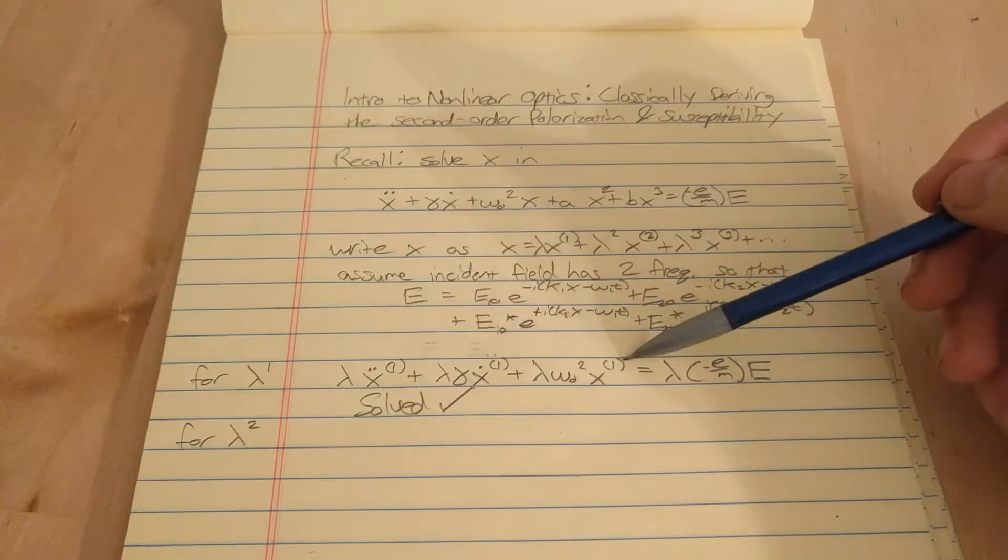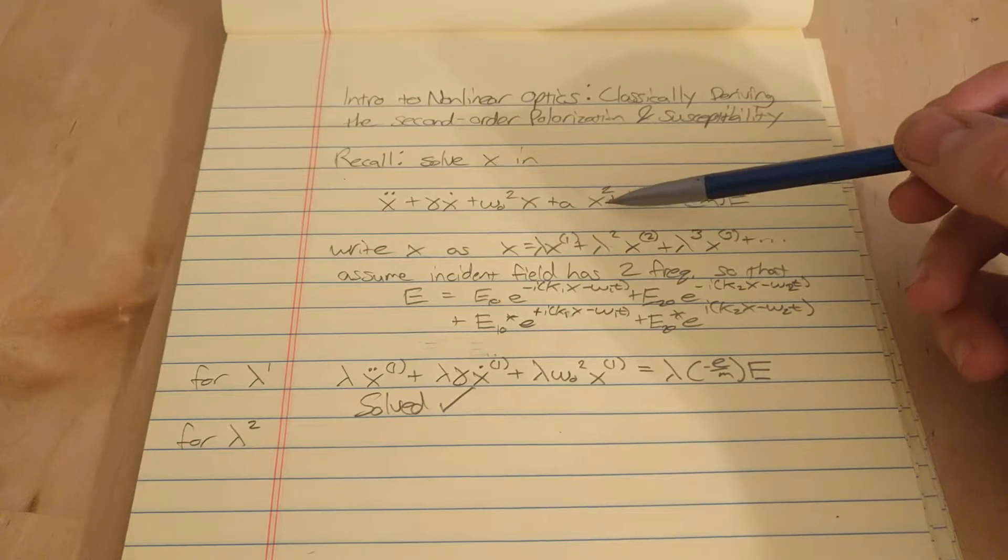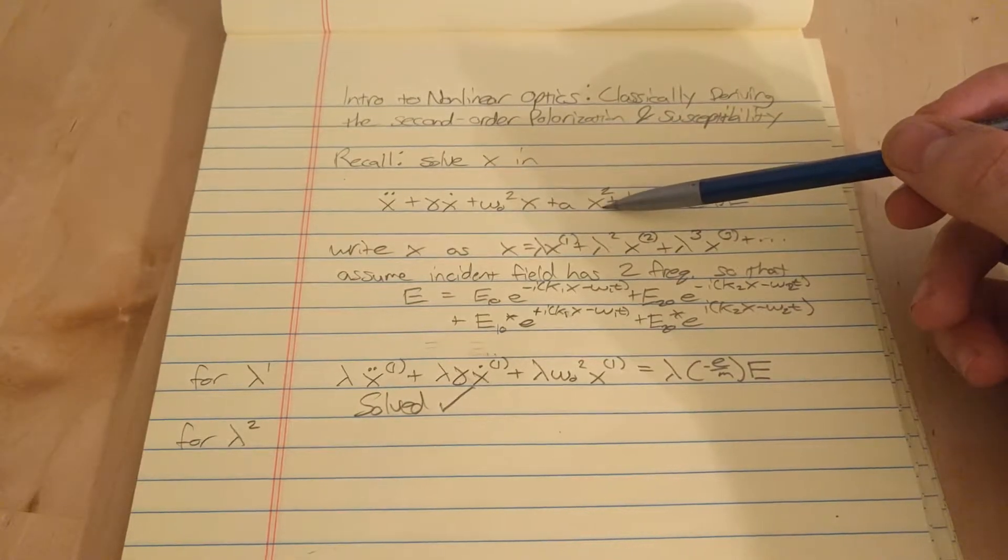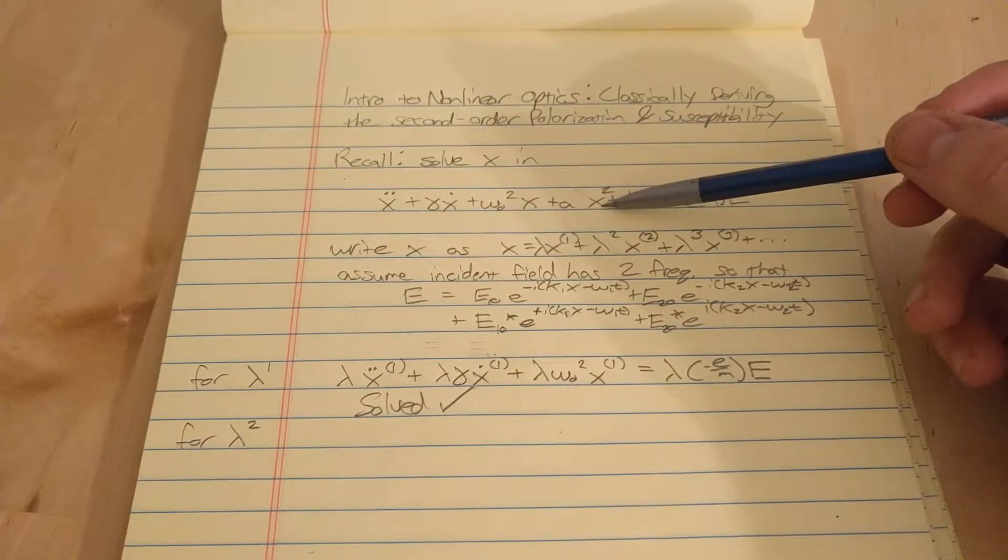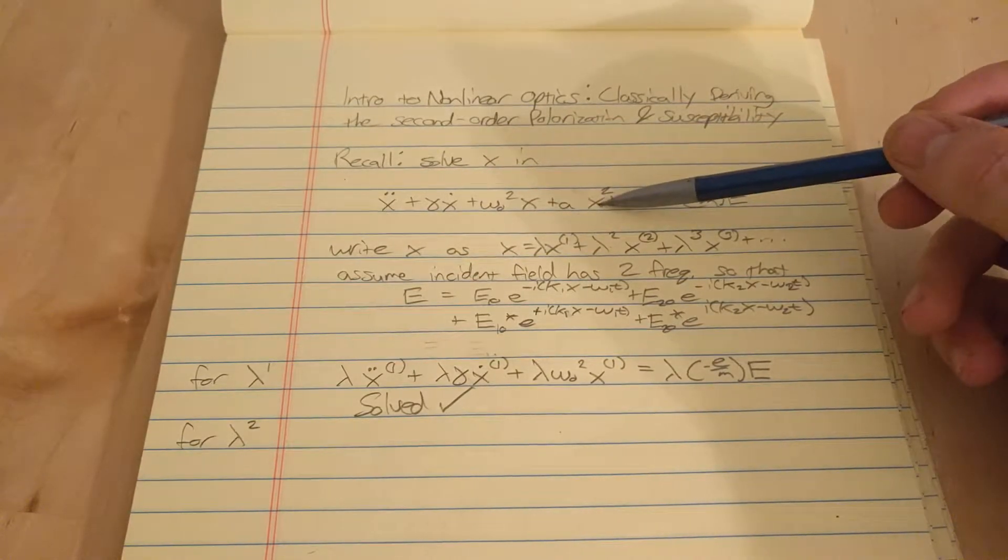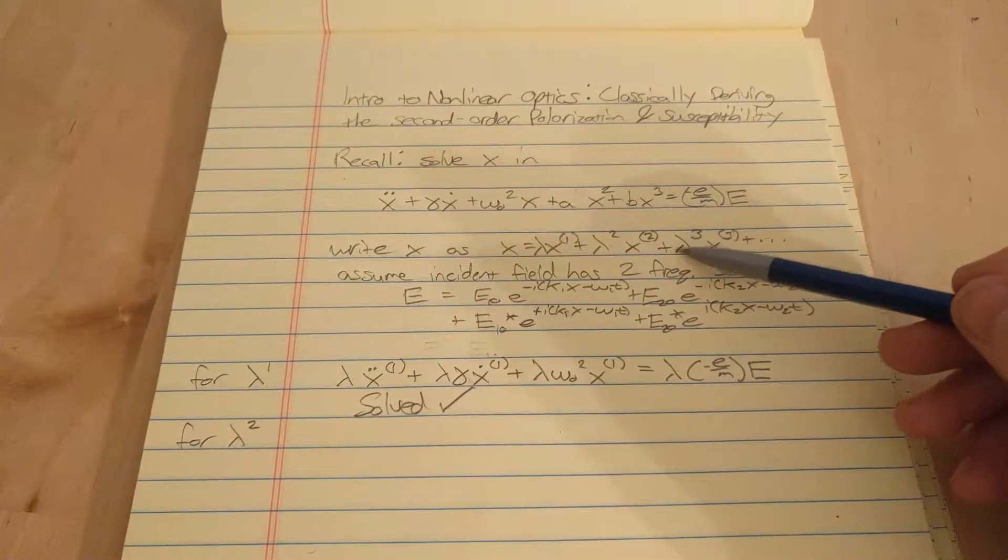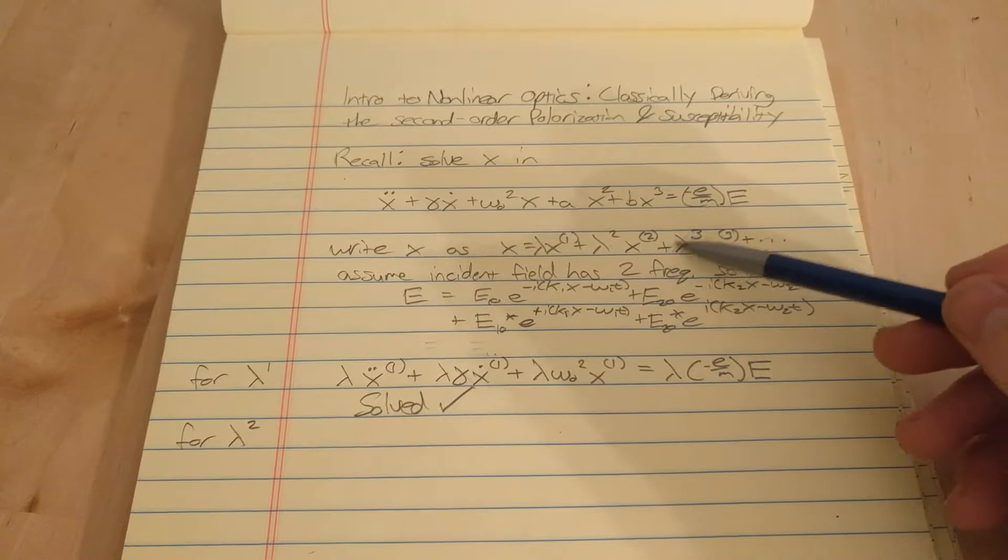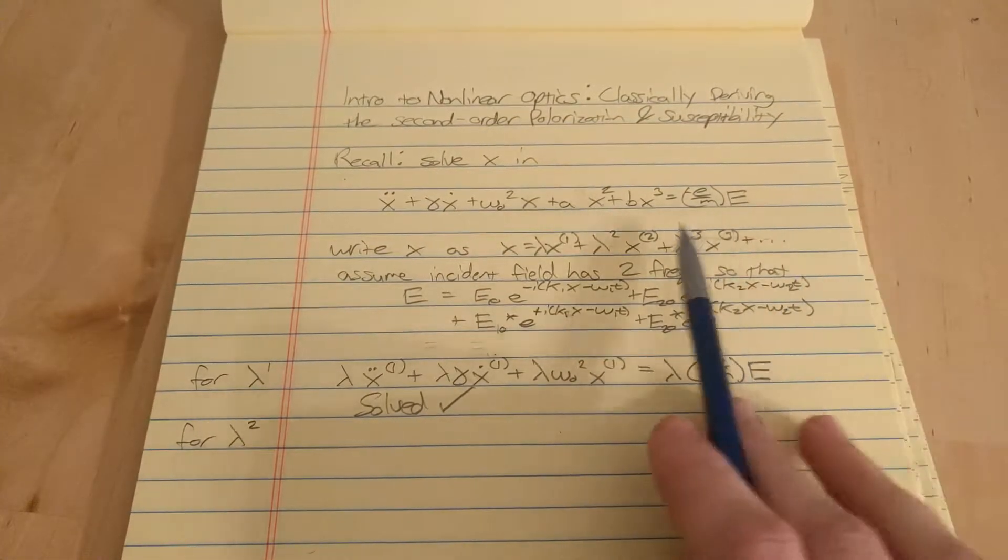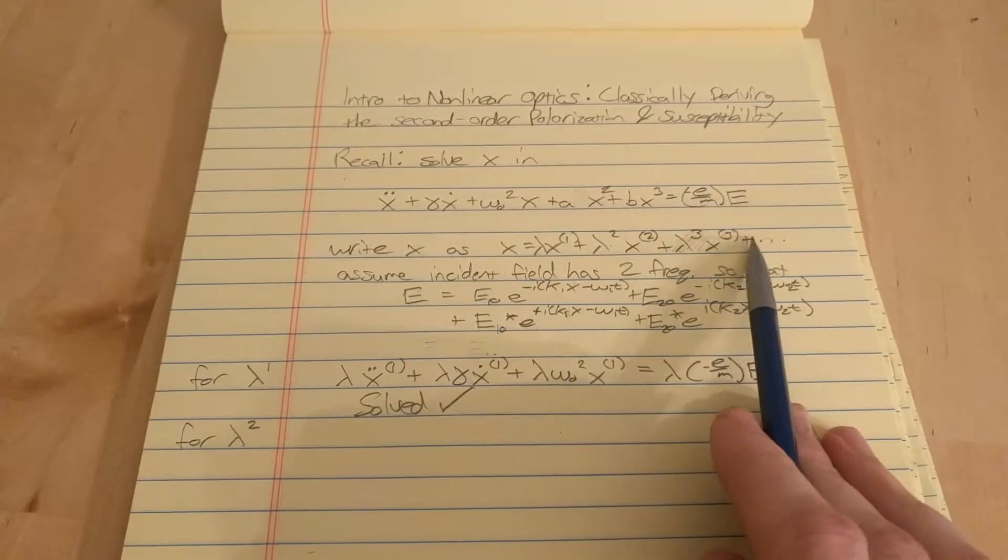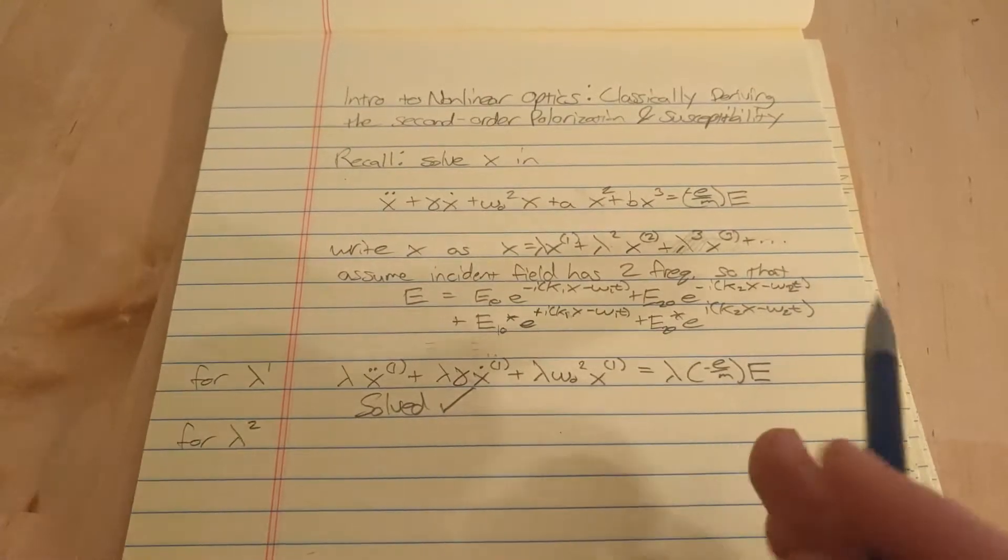For the linear part, we plugged in X to this equation and solved that in the last video. Now we're going to find all the terms with lambda squared in them. We have an X squared term here and there's going to be some lambda squared terms from that. We're going to ignore everything to the right of the perturbative expansion and take this part and square it to see what has lambda squared in it.